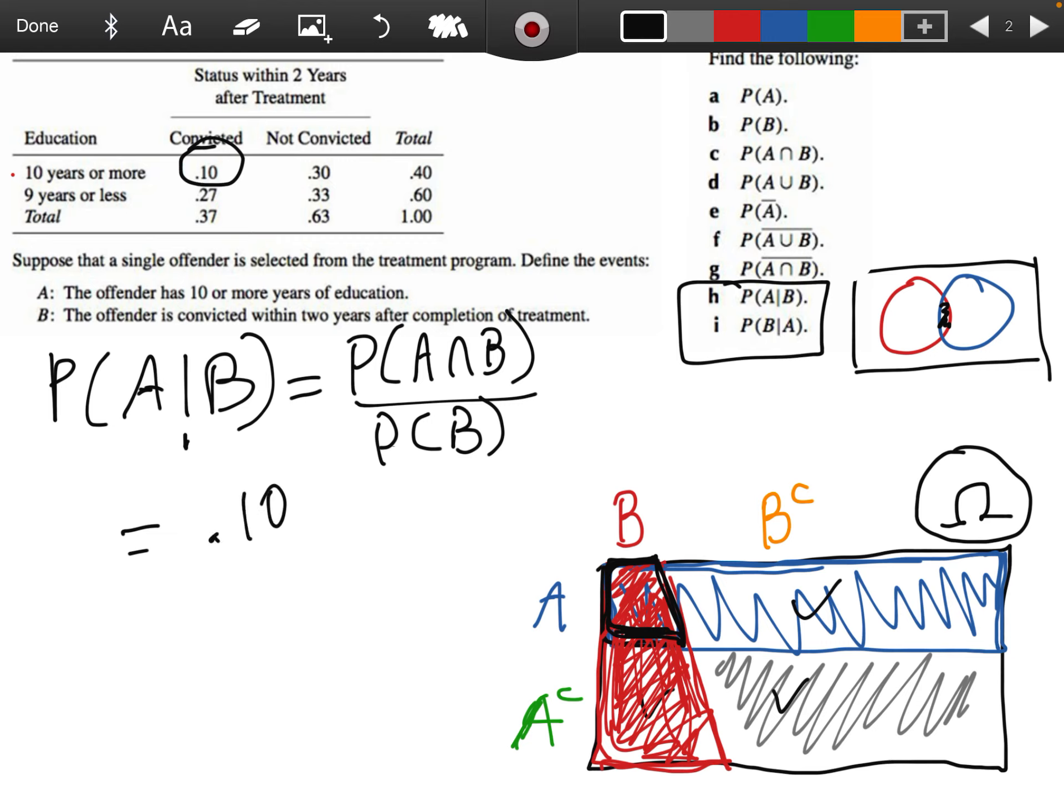So these were both things we calculated already. The probability of A intersect B, the numerator there, is 0.10, divided by the probability of B, which is the marginal probability of conviction within two years, and that's the total 0.37. And I think I actually did this earlier. Let me see if I have it handy. Obviously it's a little bit less than a third, it's around a quarter. That is 0.27, about 0.27, a little bit more than a quarter.